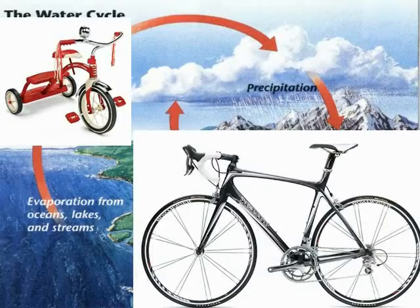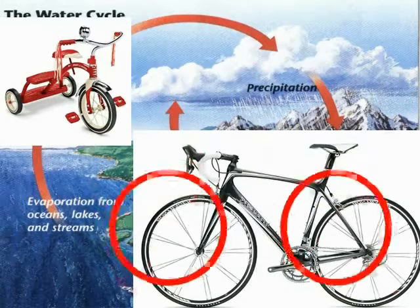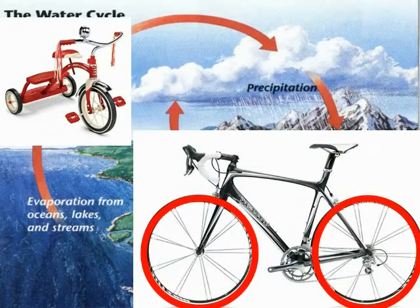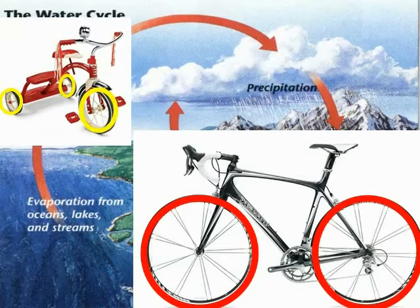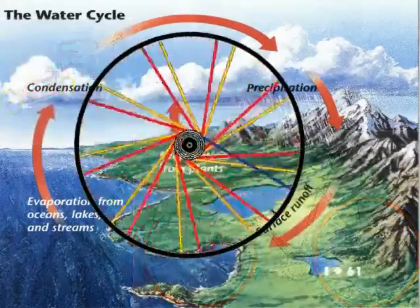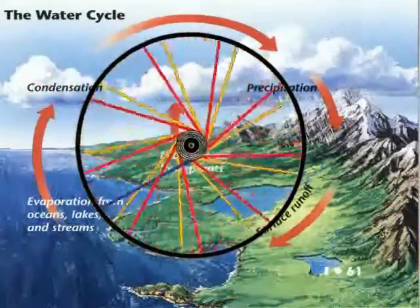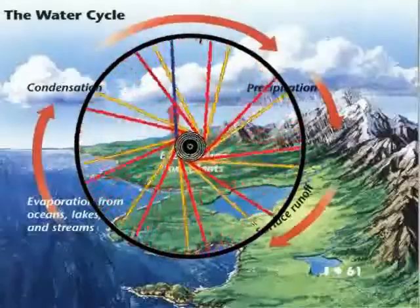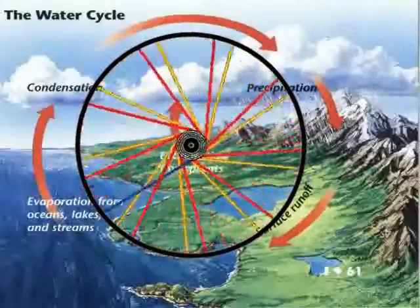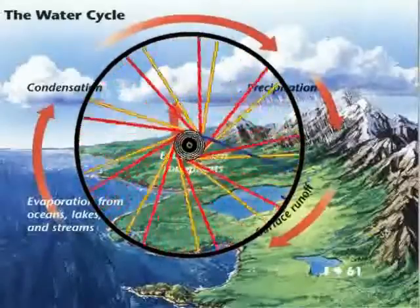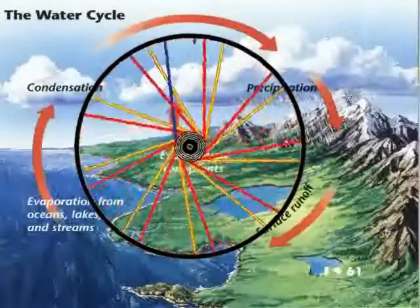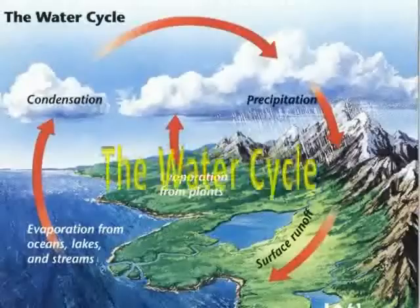Bi means two — a bicycle has two wheels. And a tricycle has three wheels, so tri means three. In science, a cycle can be represented by a wheel that is constantly turning. You will study many cycles in science. Today, we will discuss the water cycle.